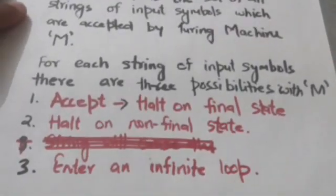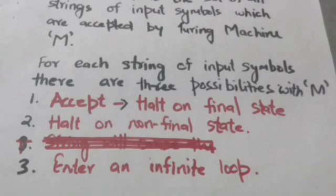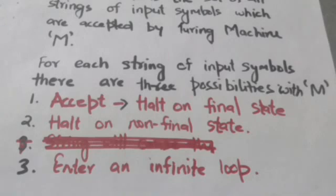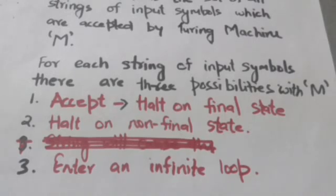For each string of input symbols there are three possibilities with Turing machine M. First, the string will be accepted by Turing machine M — that is, the string will cause the Turing machine M to halt on a final state. Second, the string will cause the Turing machine to halt on a non-final state. Third, the string will cause the Turing machine to enter an infinite loop.